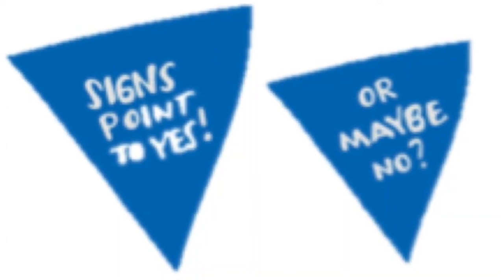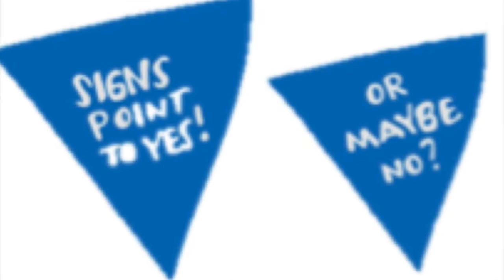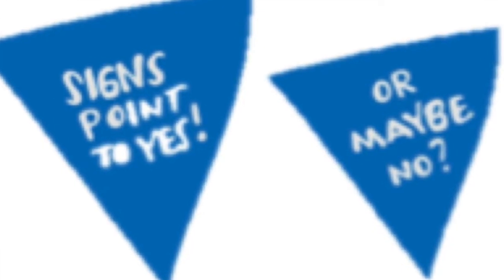When a triangle is not sitting on its base, it is unstable and can represent tension, conflict, and aggression. Triangles, no matter how they are oriented, can also communicate direction and progression.